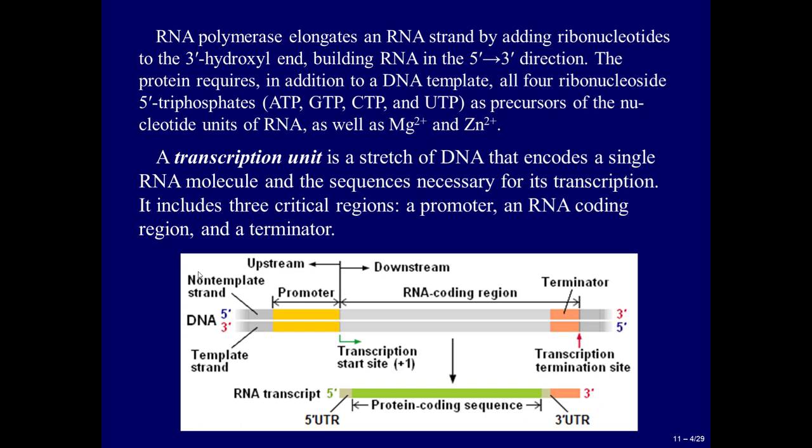RNA polymerase elongates an RNA strand by adding ribonucleotides to the 3' hydroxyl end, building RNA in the 5' to 3' direction. The enzyme requires, in addition to a DNA template, all 4 ribonucleoside 5' triphosphates — ATP, GTP, CTP and UTP — as precursors of the nucleotide units of RNA, as well as Mg2+ and Zn2+. A transcription unit is a stretch of DNA that encodes a single RNA molecule and the sequences necessary for its transcription.